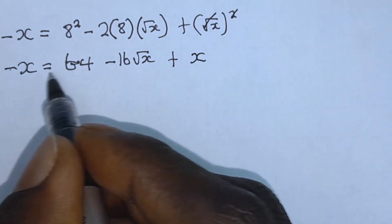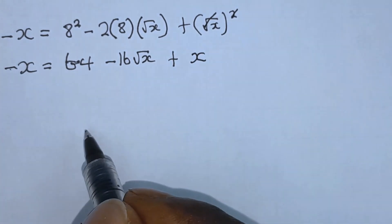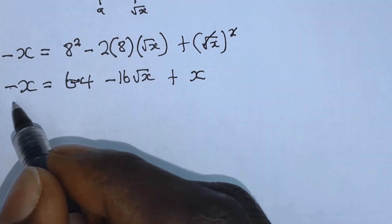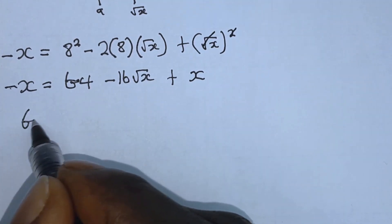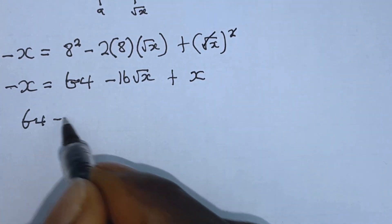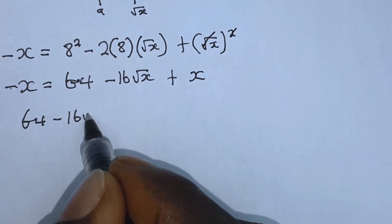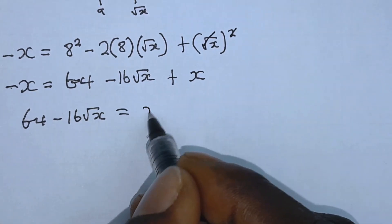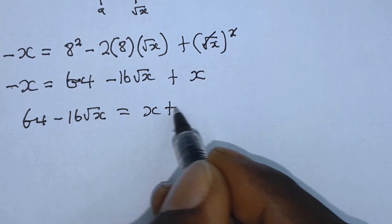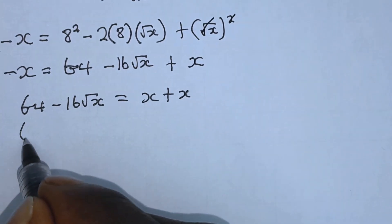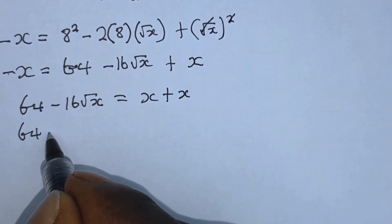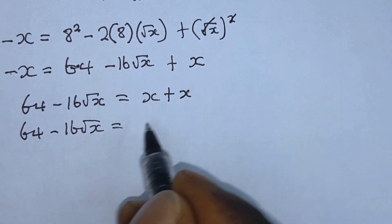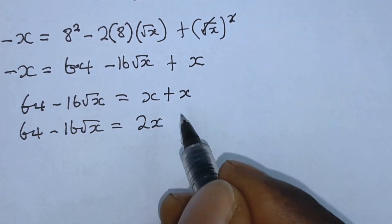From this step we have to rearrange. So we have 64 minus 16 root of x which is equal to x plus x, giving us 64 minus 16 root x which is equal to 2x.